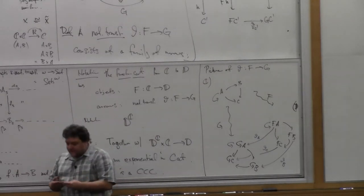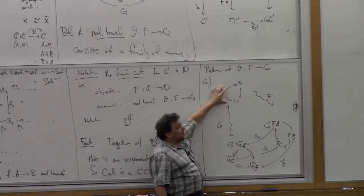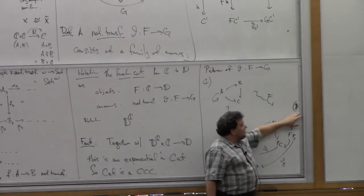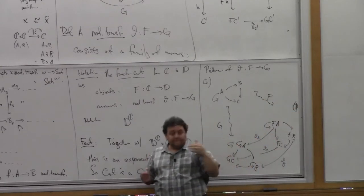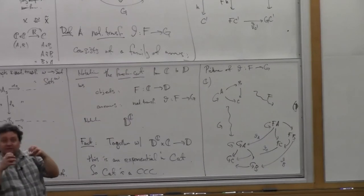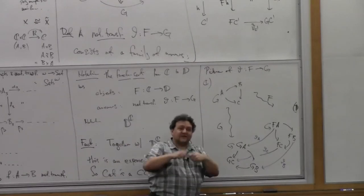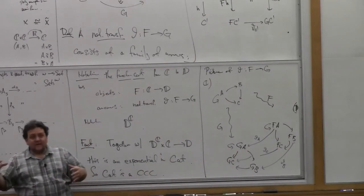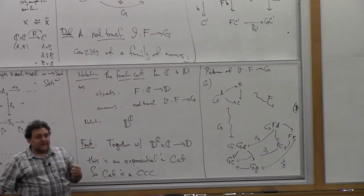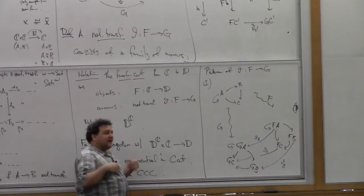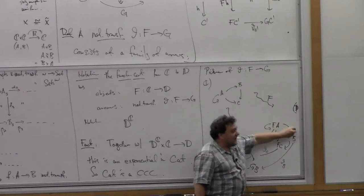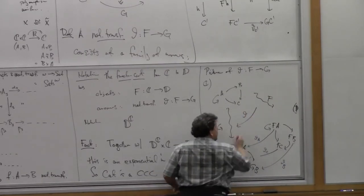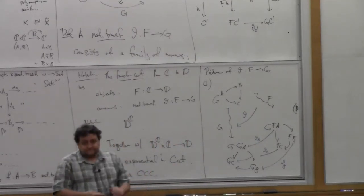If you think of a functor as a kind of construction on the objects in category C — you have these objects and arrows and you use them to construct something over in D — then G is some other construction. Theta is a way of transforming one of the constructions into the other. It's relating the constructions themselves, not the individual values of the construction. It relates the whole construction F to the whole construction G.